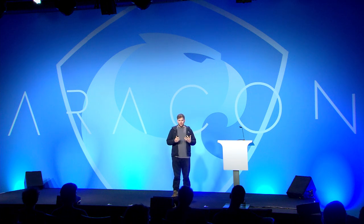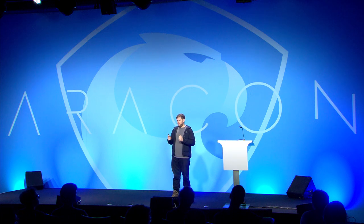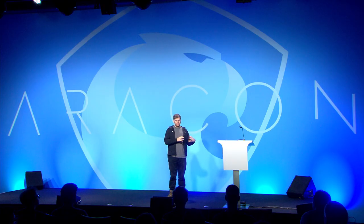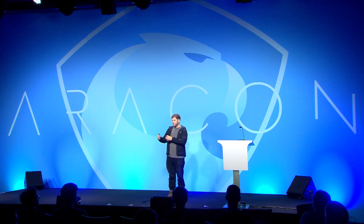We're building all of these systems on the Ethereum blockchain today. But when we move to a sharded version of Ethereum, everything is going to break, and all of the ways we've been thinking about building dApps are going to have to change. The problem we face: do we want to have this canonical system of smart contracts — the 0x pipeline — exist on a single shard and force people to move their assets onto that shard? I don't think that makes sense. In order to have a truly decentralized blockchain, we're going to have to have some basic infrastructure that's available on every single shard, otherwise all dApps are going to want to co-locate on just one or two shards — which brings us right back to where we are today.